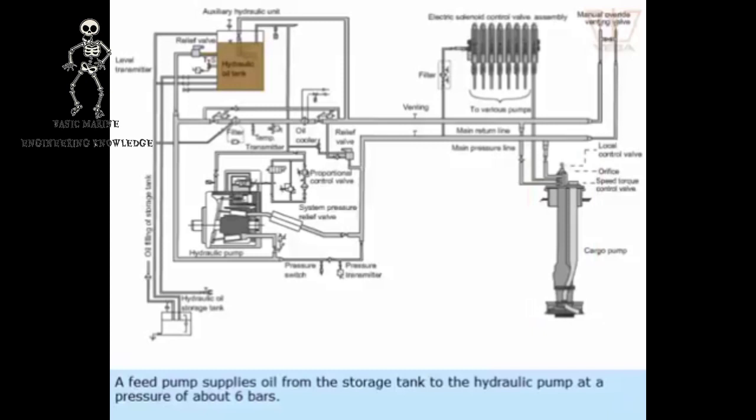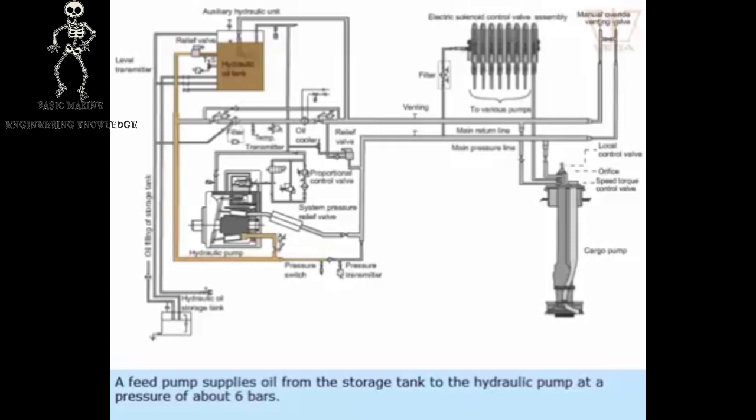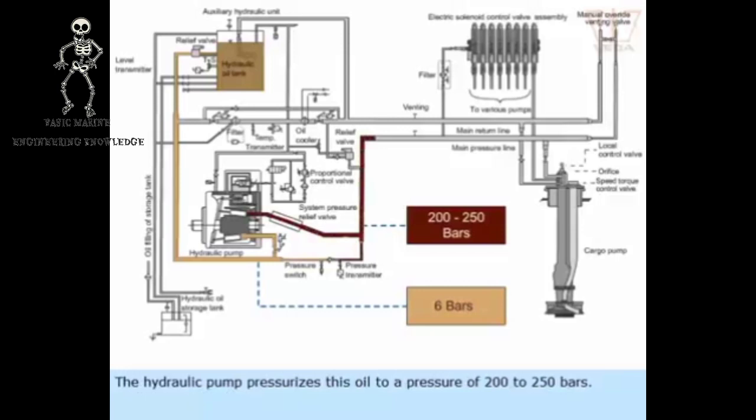A feed pump supplies oil from the storage tank to the hydraulic pump at a pressure of about 6 bars. The hydraulic pump pressurizes this oil to a pressure of 200 to 250 bars.